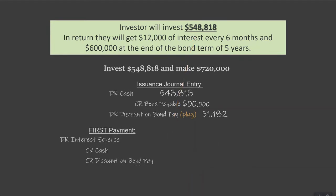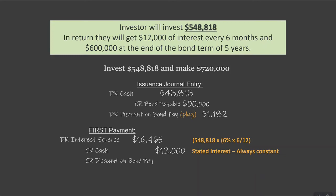Let's go ahead with numbers and do the first payment. We're going to debit interest expense using our initial balance times our market interest rate of 6% times six over twelve, because we're doing this in six months, which gives us $16,465. Our credit to cash is the stated interest of $12,000. And then our discount on bonds payable is the plug of $4,465 — that's what gets our debits and credits to balance.